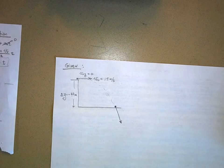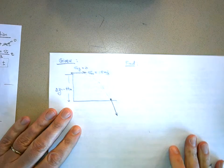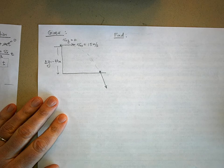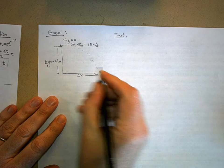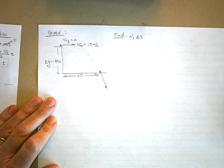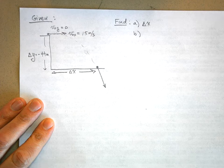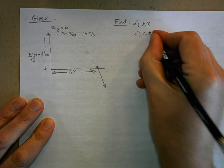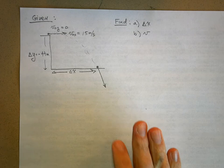What are we trying to find? For part A, we want to know how far from the base of the cliff the stone hits the ground — that's Delta X. For part B, how fast is it moving the instant before it hits the ground — that's the final velocity overall. Let's solve it.